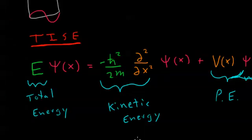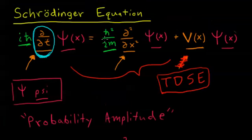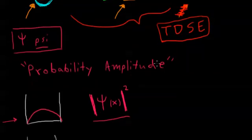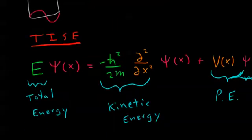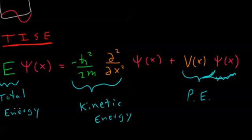To summarize: this is the time-dependent Schrödinger equation. The wave function for matter waves has units of probability amplitude — the square of the wave function gives the probability of the particle being at a specific position x. We then made a simplification to arrive at the time-independent Schrödinger equation, which is very useful and which we'll use in the next video.